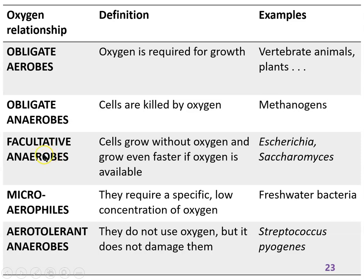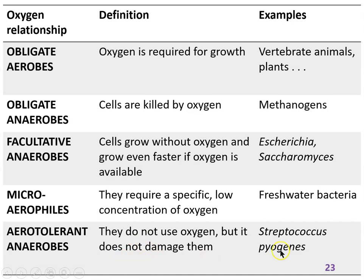E. coli and Saccharomyces — bread yeast — are facultative anaerobes. Less common are microaerophiles, which need a very specific low concentration of oxygen, and they're typically adapted to growing in water like a lake or river where there's a constant low oxygen concentration. We don't see many microaerophiles among human pathogens, but we see all the other patterns. We also see aerotolerant anaerobes, which don't use oxygen and don't care if it's present because they can detoxify it easily — the Streptococcus bacteria are like this.